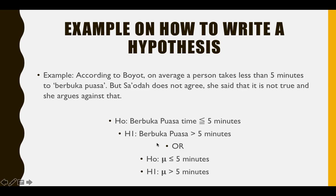We can also write the hypothesis formally: H0, or null hypothesis, mu (the sample mean) is less than or equal to five minutes. Remember, five minutes here is the hypothesized mean — we are testing mu equal to five minutes. Whereas for H1, mu or sample mean is more than five minutes. So there are two ways of writing the hypothesis in this example.